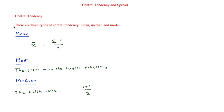The mean is basically the average, and in order to calculate the mean you have to calculate the result. This is the sum of all x divided by n, where n is the frequency — so how many values there are.